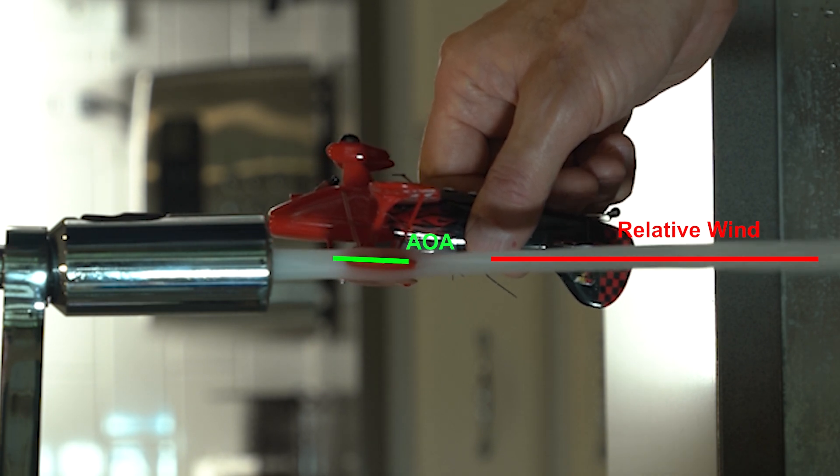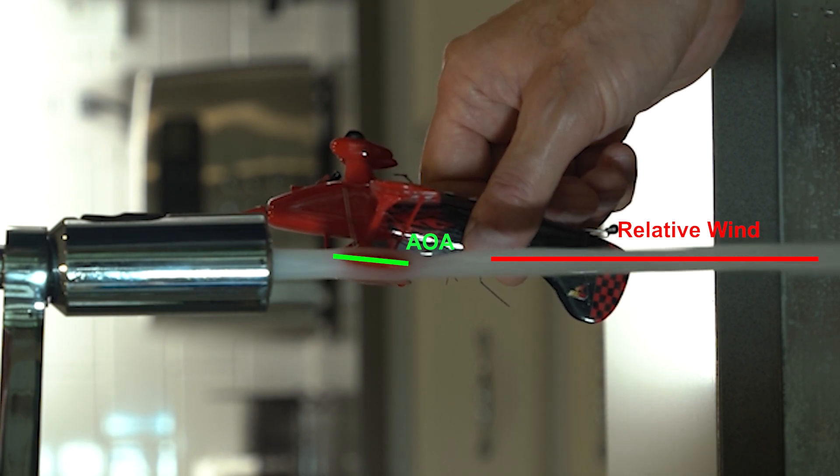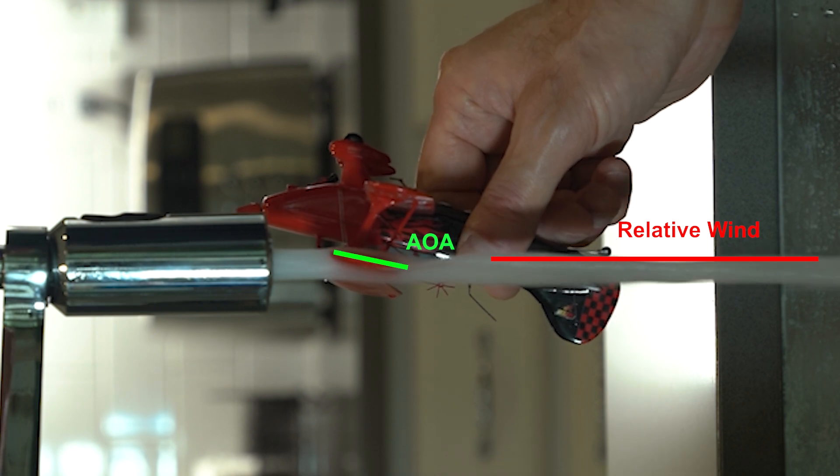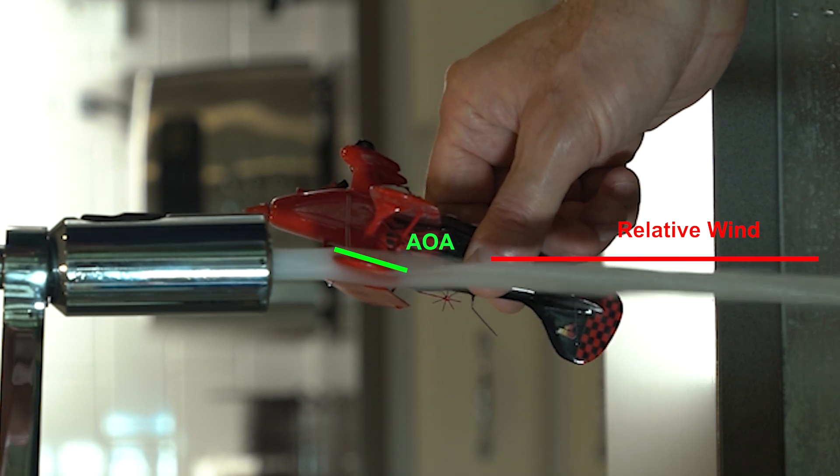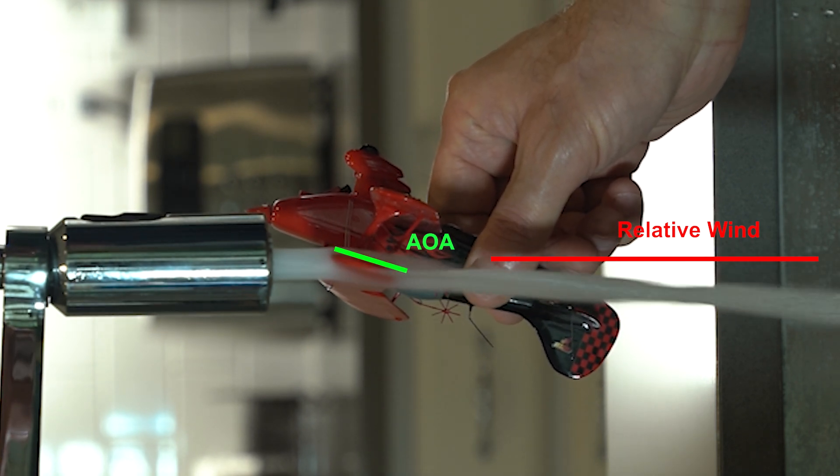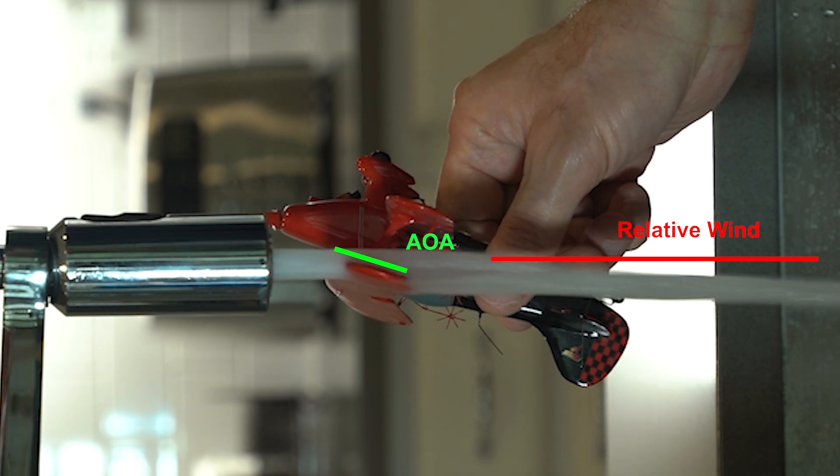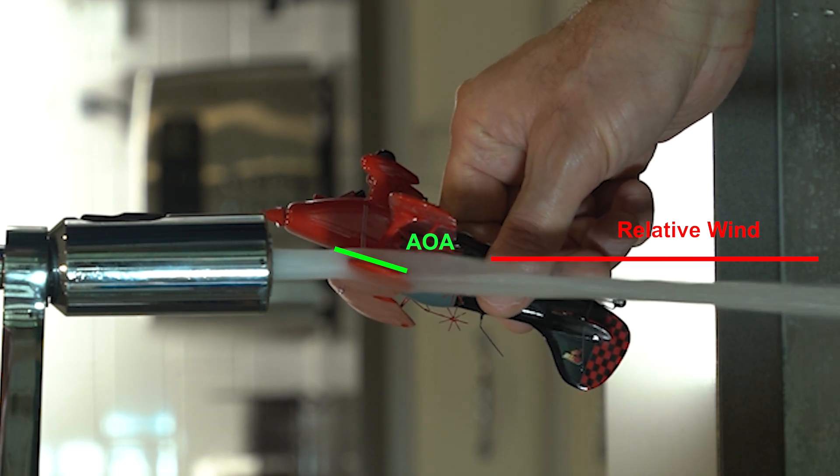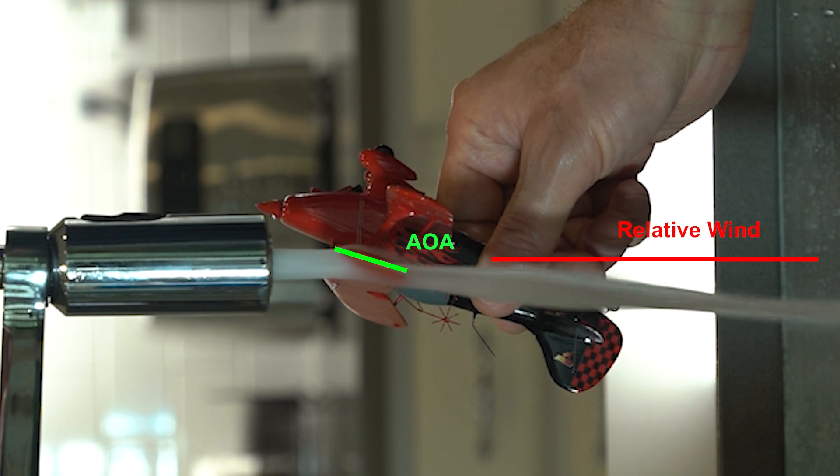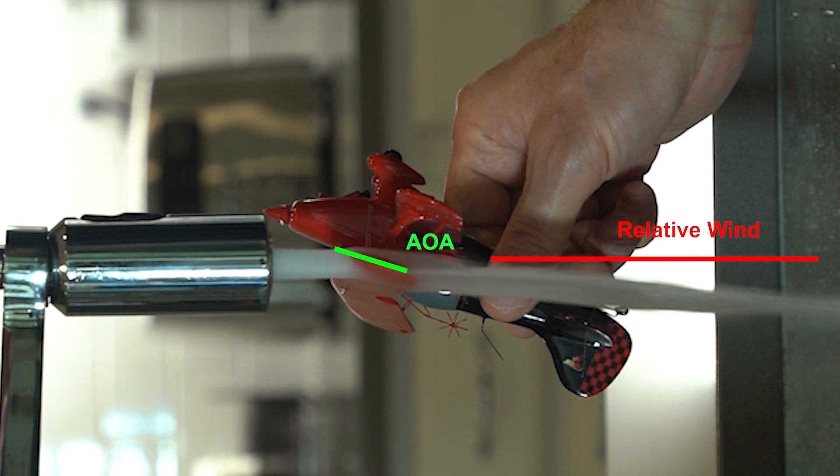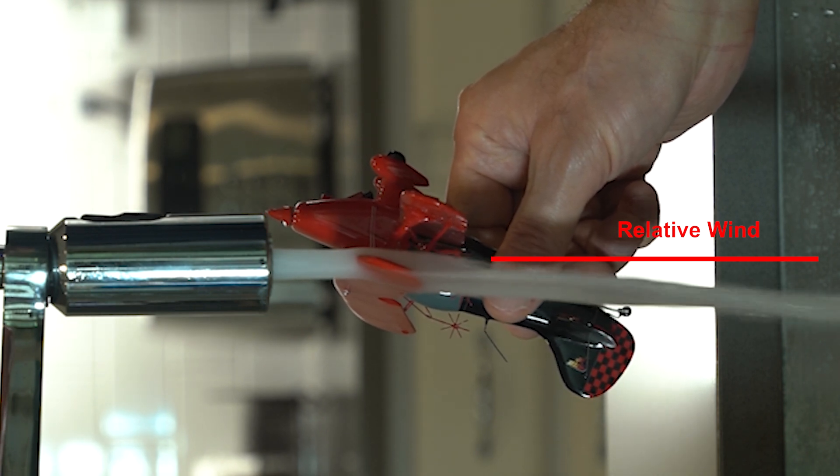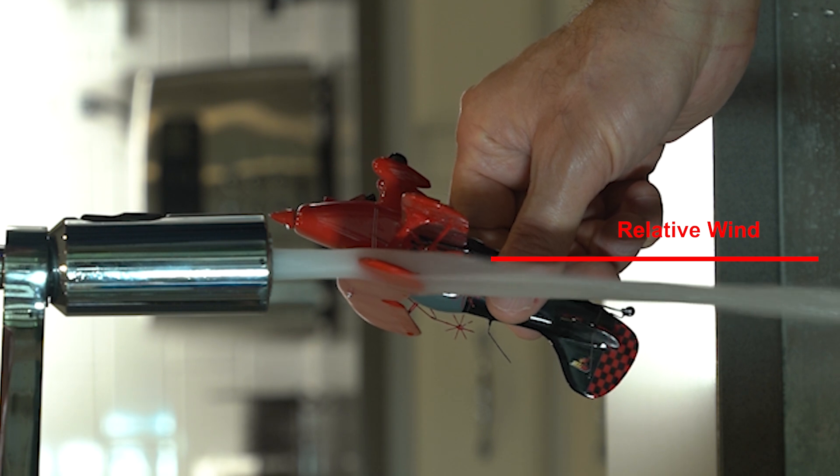Now I want to push the nose up away from the ground and you'll notice that the flow is starting to bend towards the ground. This is where lift is created, this is what a wing does. It redirects the flow of air and from Newton's third law we know that for every action there's an equal and opposite reaction, so if the air is moving down the wing must be moving up.